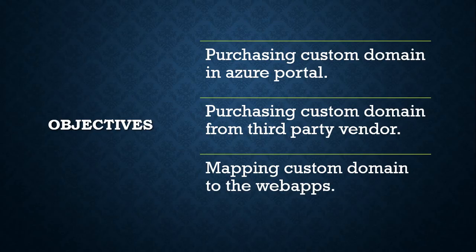Coming to the objectives, in the following tutorial we are going to do three different things. The first one is we are going to purchase a custom domain in our Azure portal. Number two, we shall try purchasing a custom domain in some other third party site. And finally, we will map the third party domain which we have purchased to our web app service that we would have created in our Azure portal.